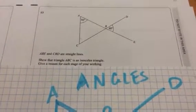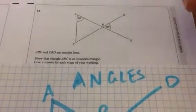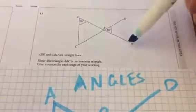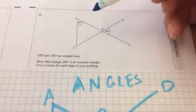Hello and welcome to Martin Maths. We're doing a foundation paper question here on angles and we've got two straight lines ABE and CBD meeting at the point B and we're going to show this triangle ABC is isosceles.